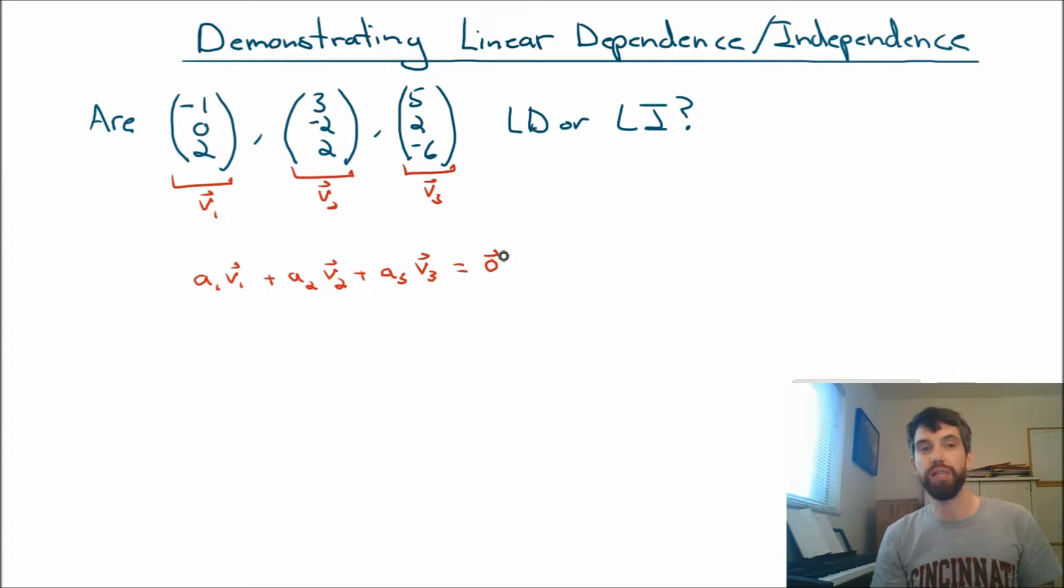Now we should have seen something that looks like this before. What we have is precisely a linear combination of vectors. And linear combinations of vectors we interpreted as being a matrix vector product. So what we have over here, this entire expression, is the same thing as the matrix whose columns are the three different vectors. So the first column is v1, the second column is v2, and the third column is v3, multiplied by the vector that is the components a1, a2, and a3.